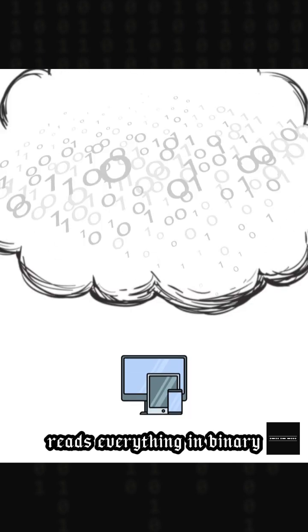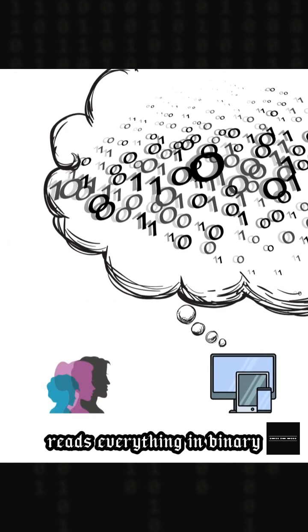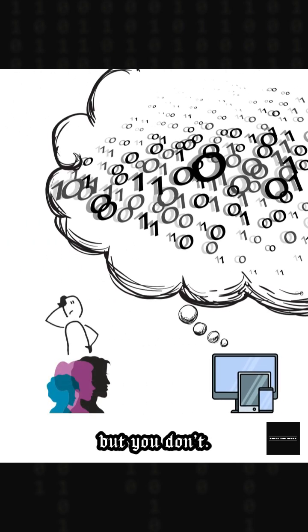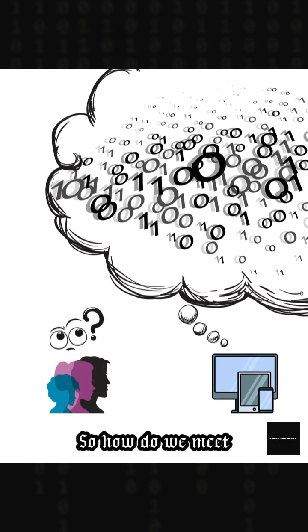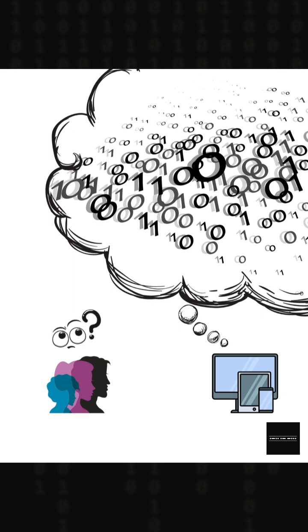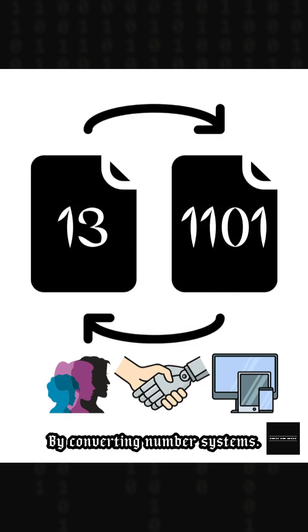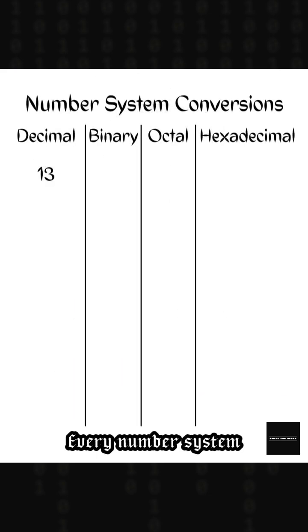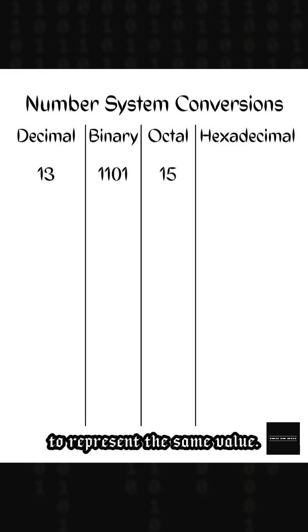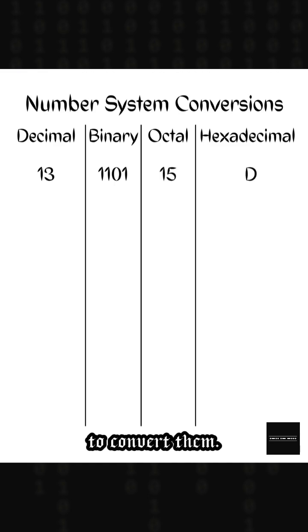Your computer reads everything in binary, but you don't. So how do we meet in the middle? We're converting number systems. Every number system is just a different way to represent the same value. Here's the simplest way to convert them.